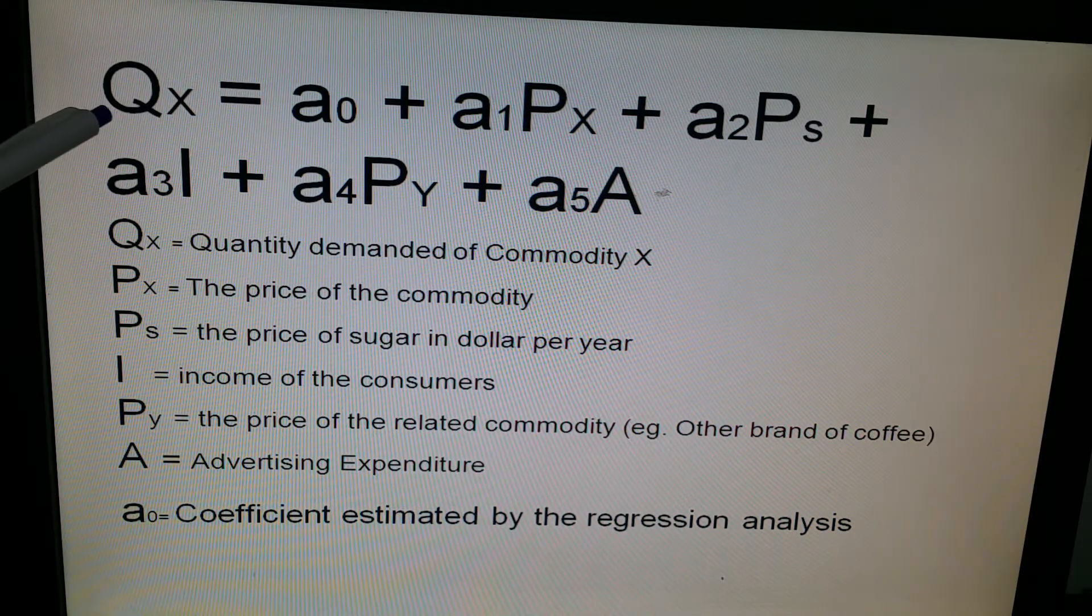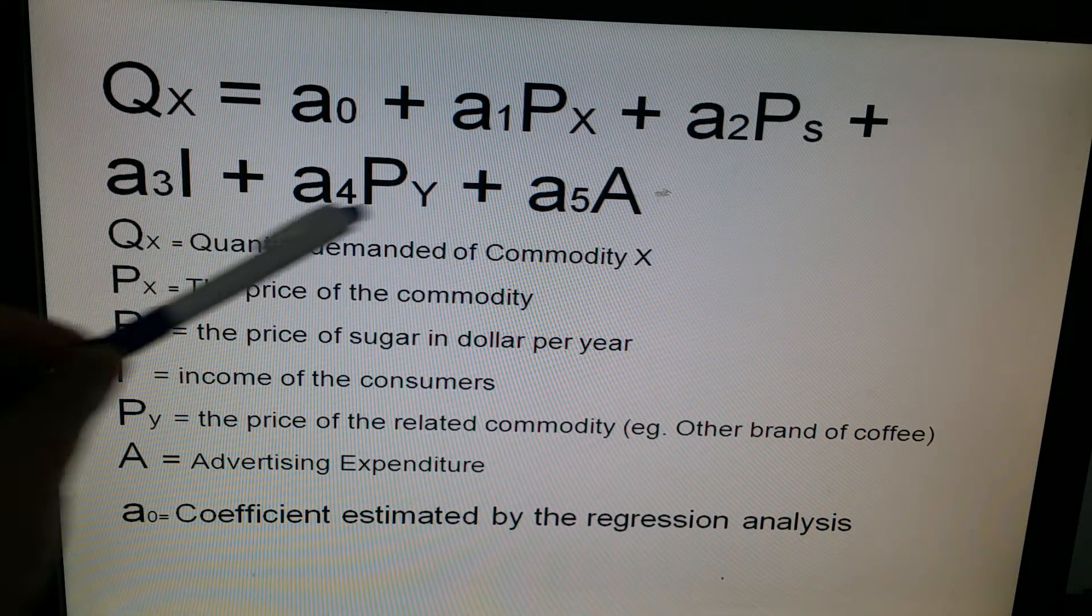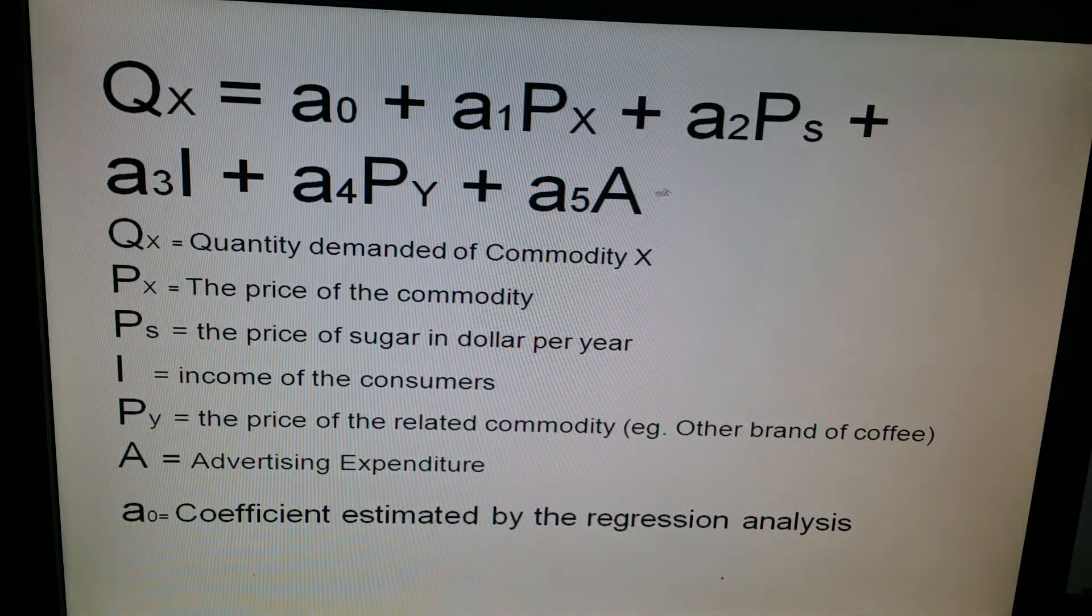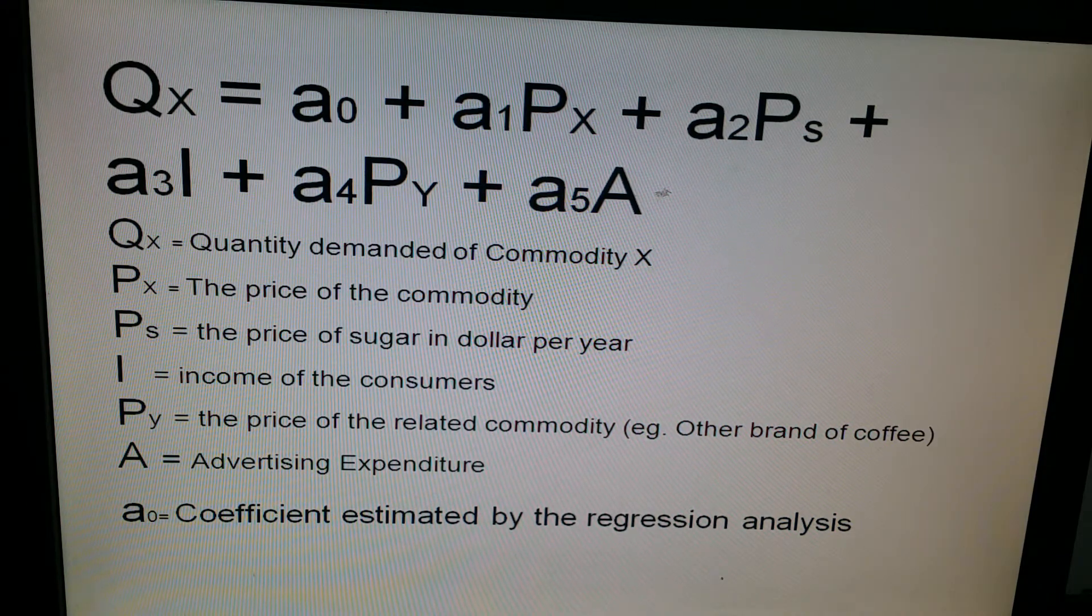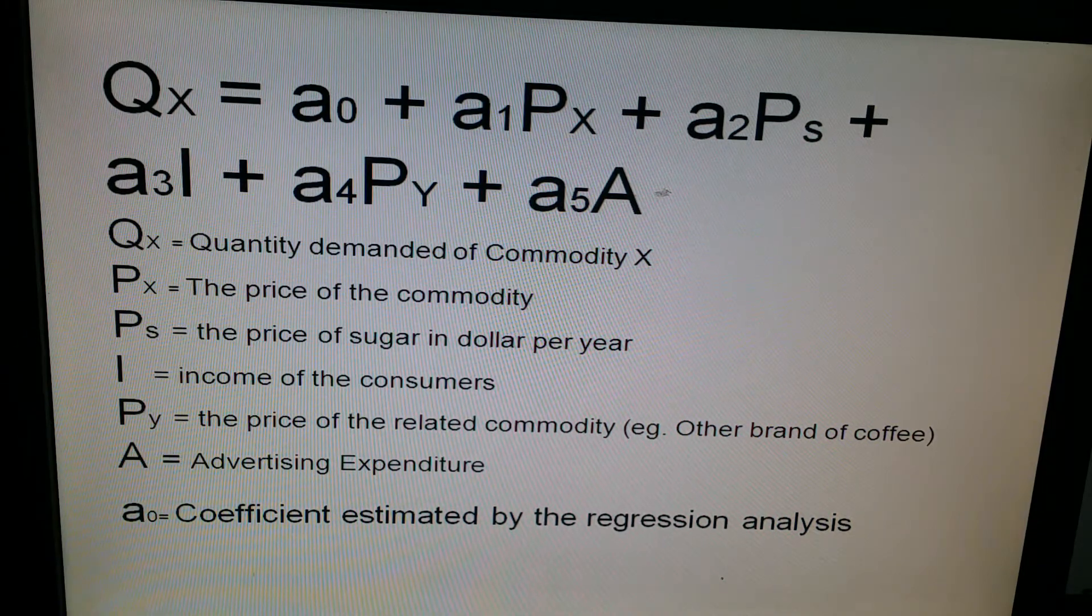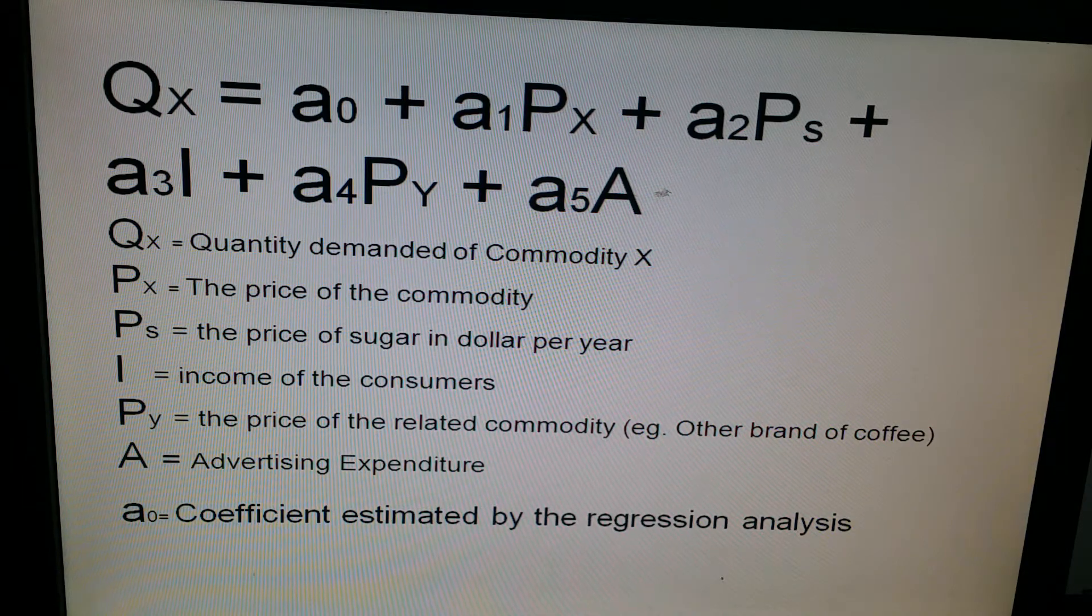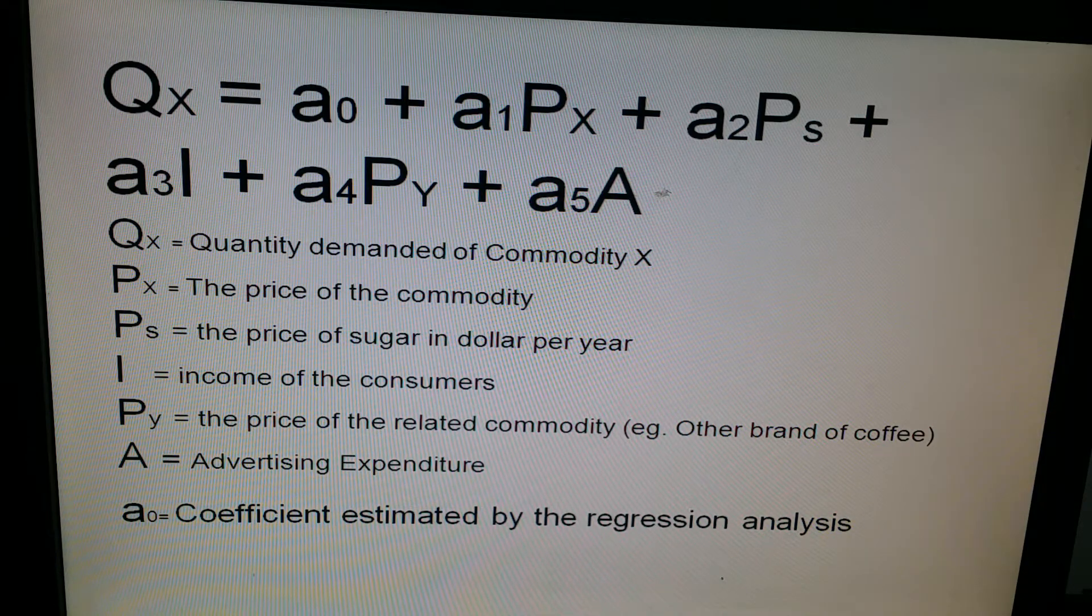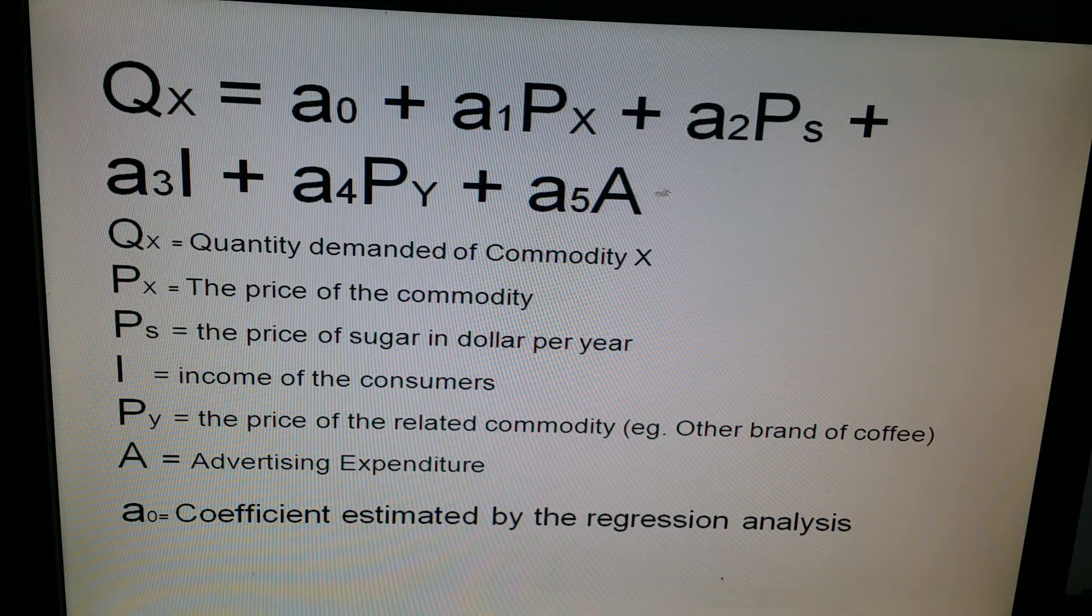Quantity demanded of X is dependent on a number of factors. What is it dependent on? It's dependent on PX. So what is PX? PX is the price of the commodity itself. So what are we doing here? We are in this equation bringing together the price of the product and the non-price determinants of demand together in this one equation to prove that the quantity demanded of X depends on these things.